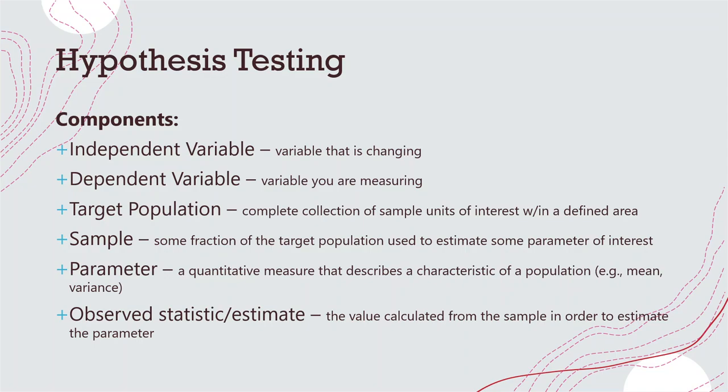You then have a target population, which is the complete collection of all sample units of interest within your defined area, timeframe, etc. But within that target population, you have a sample, because it's not often you can measure every single individual in the population. You have a sample of individuals, which is some fraction of that population. This sample is what you use to estimate some parameter of interest — a measure that describes the characteristics of the population, such as mean or variance. And finally, we have an observed statistic or estimate, which is a value calculated from the sample in order to estimate the parameter of the population.